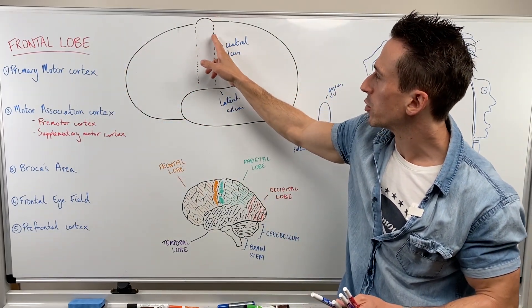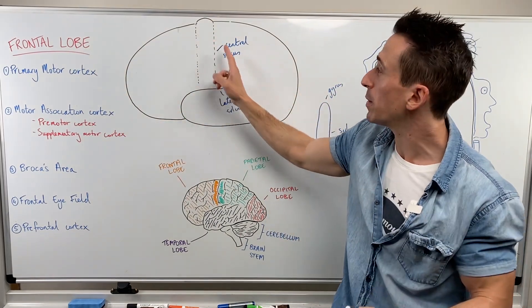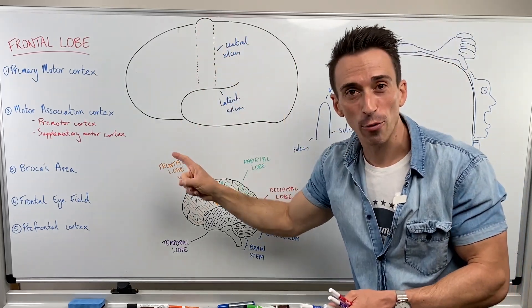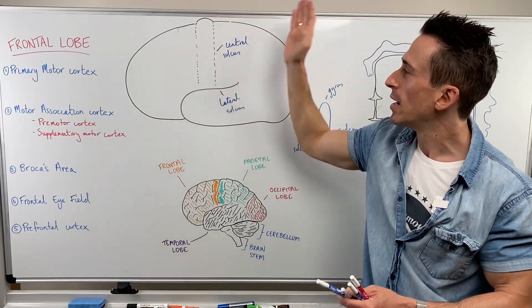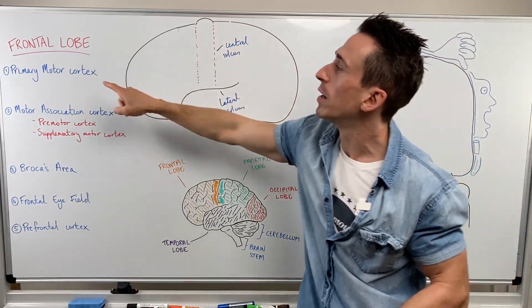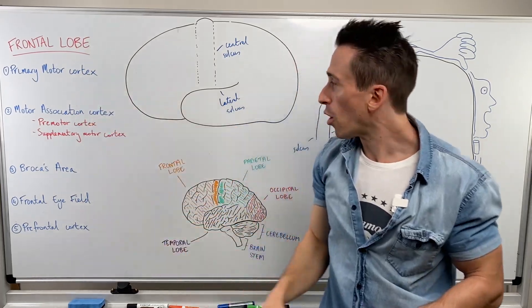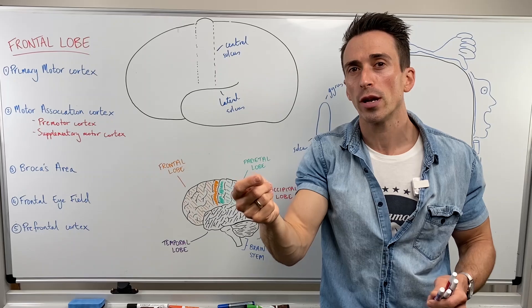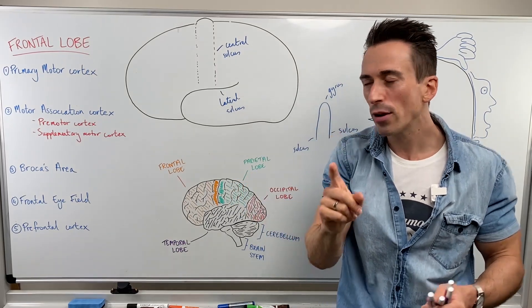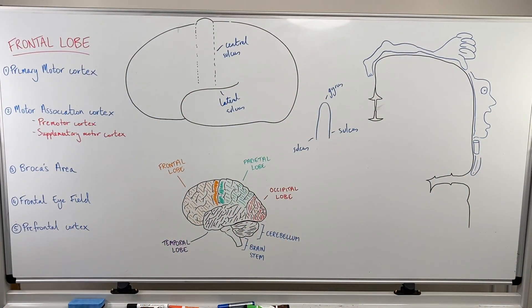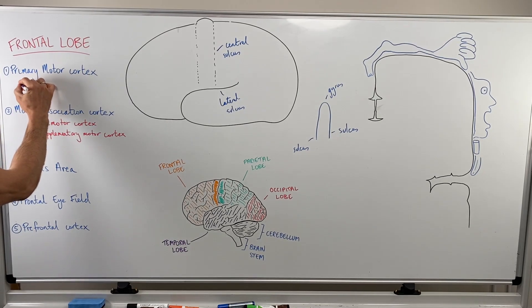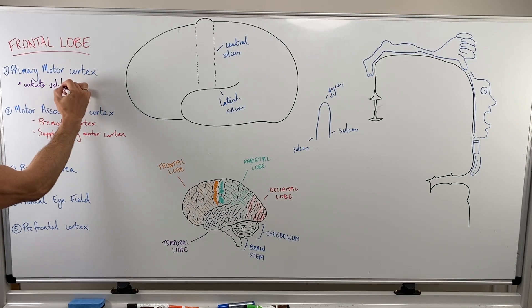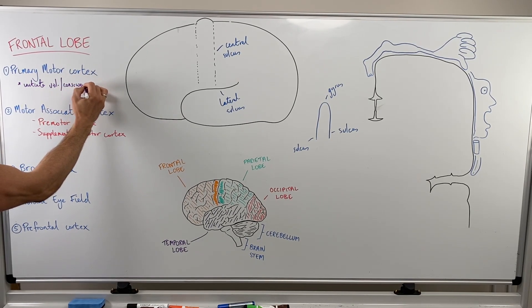We've got the central sulcus, which means there must be a gyrus in front of it, which we call the pre-central gyrus. This is actually the site of the primary motor cortex. The primary motor cortex is important — it is the area in which we initiate voluntary movement, or conscious movement. That's worth writing down.